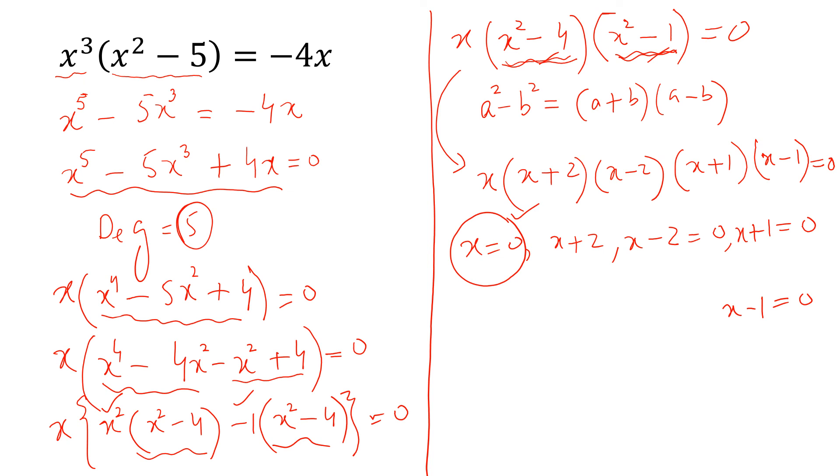So, this is one solution. The next is x is equal to minus 2, then x is equal to 2, then x is equal to minus 1 and then x is equal to 1.